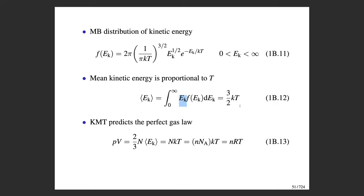Using the Maxwell-Boltzmann distributions, we substitute this average kinetic energy back into our pressure expression and get that pressure times volume equals number of molecules times Boltzmann's constant times temperature: PV = NkT. Rewriting the number of molecules as moles times Avogadro's number, and recognizing that Avogadro's number times k equals the gas constant R, we finally derive the perfect gas law PV = nRT using kinetic molecular theory.